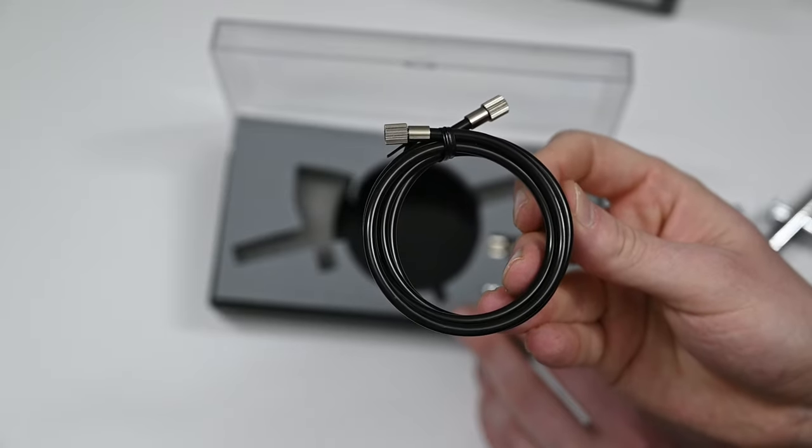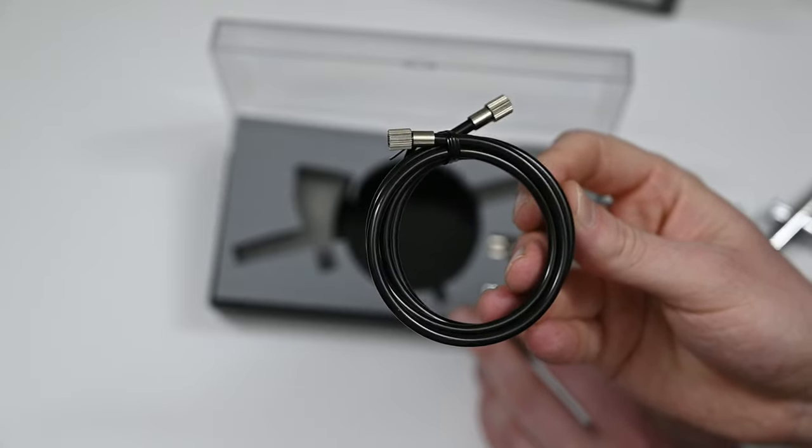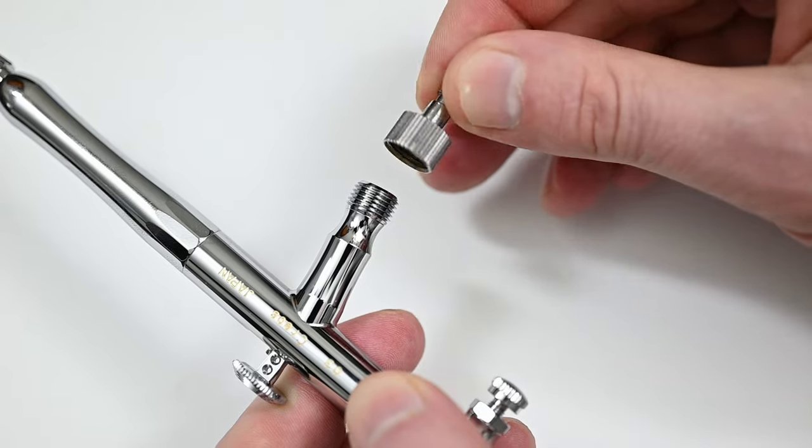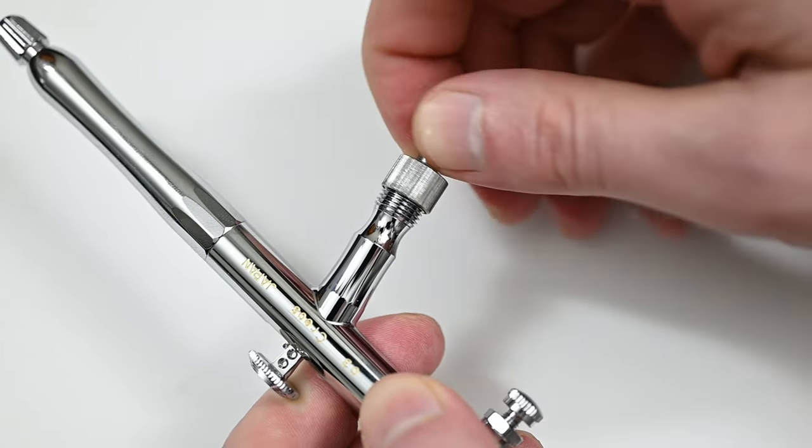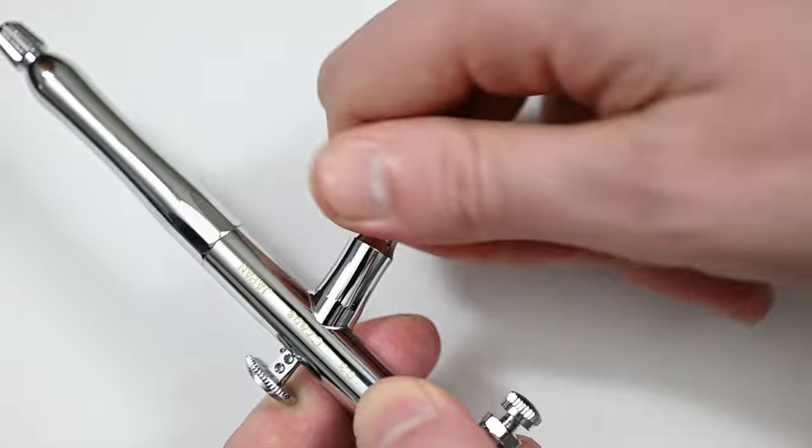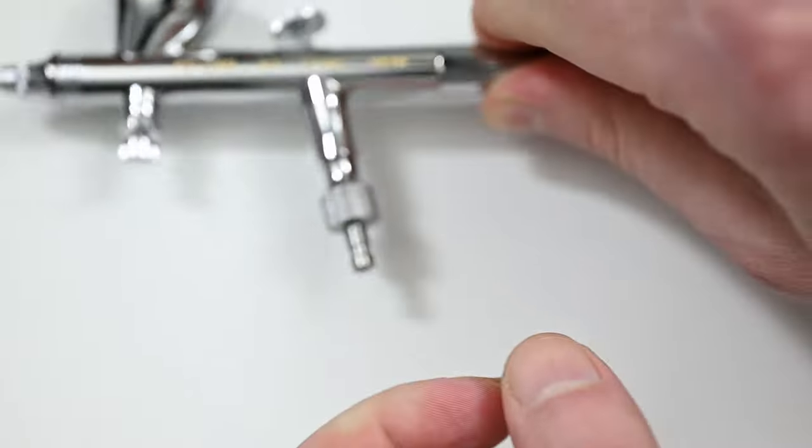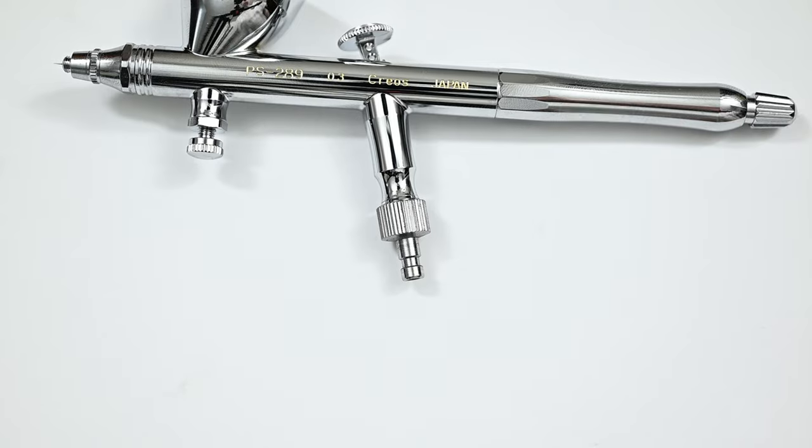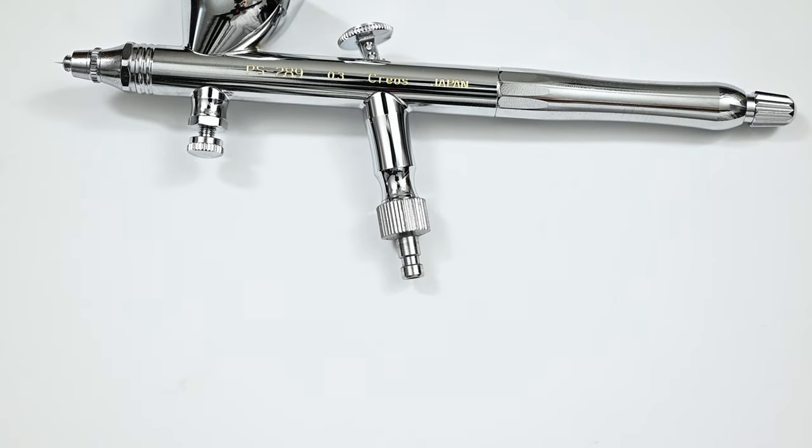I think that it's very nice that these are included, but I just use standard 1/8 inch airbrush hoses with my compressor. The threading on the PS289 is standard 1/8 inch, so I just put on a quick adapter, and then I use this to connect to my Iwata air hose, just like any other Iwata airbrush.